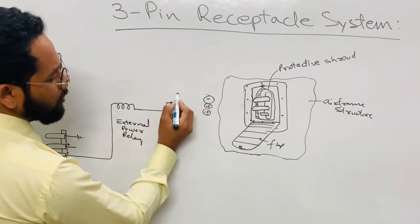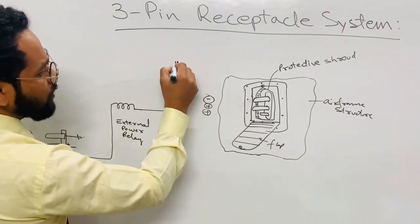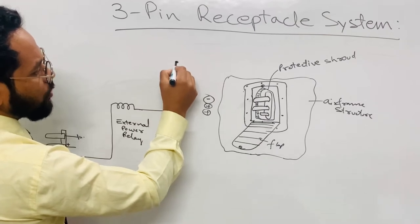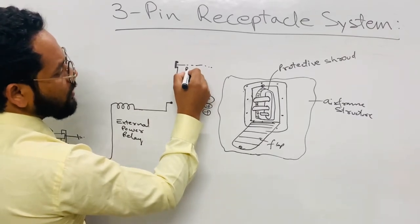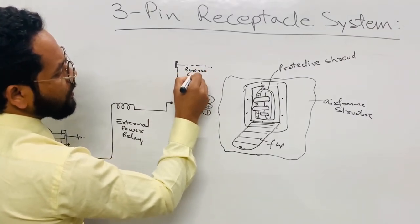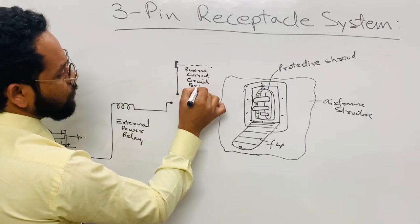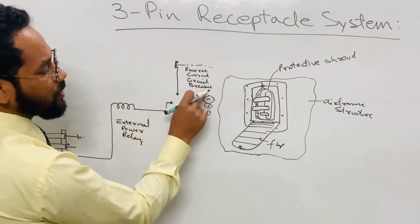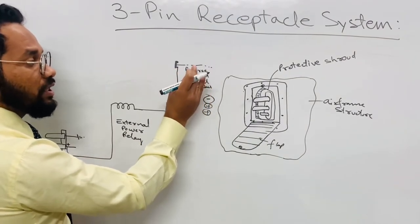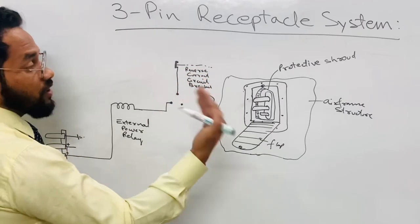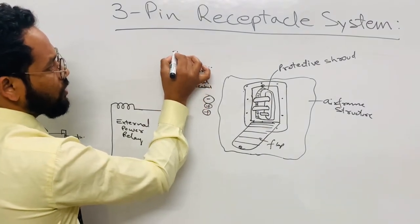The grounding path is also provided by means of a contact of a unit called the reverse current circuit breaker (RCCB). This contact is of the reverse current circuit breaker — that topic will be covered in another YouTube session. From here, if supply comes in, it will go through and connect to the grounding path.